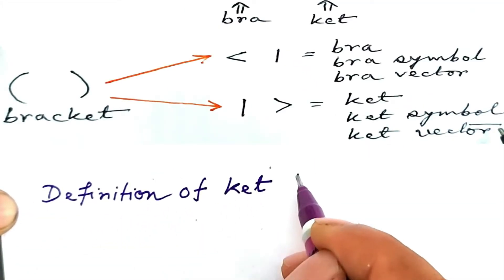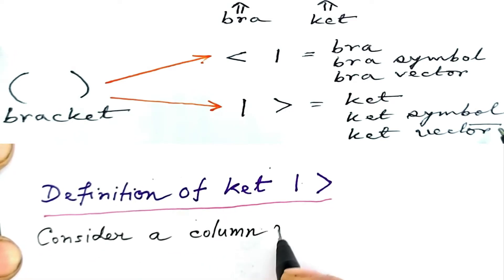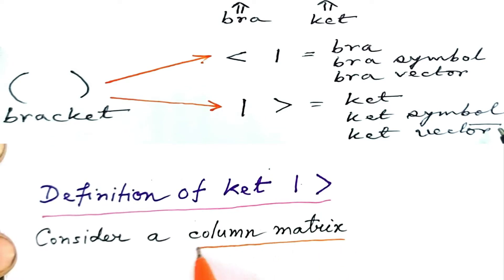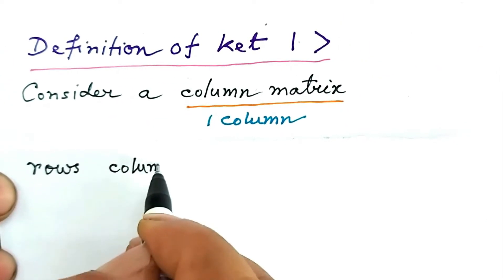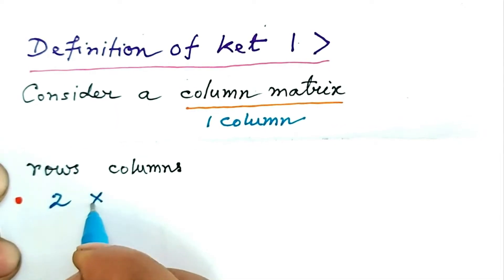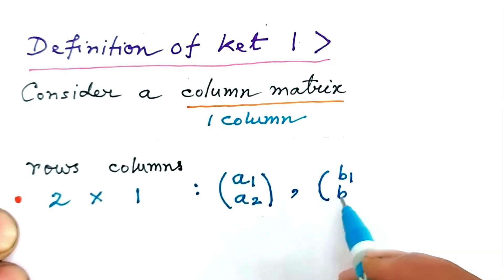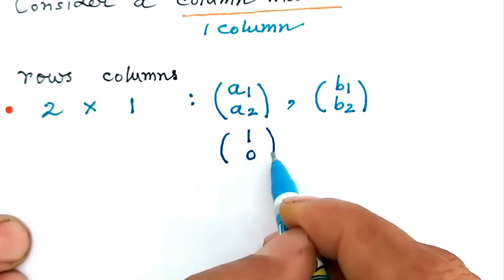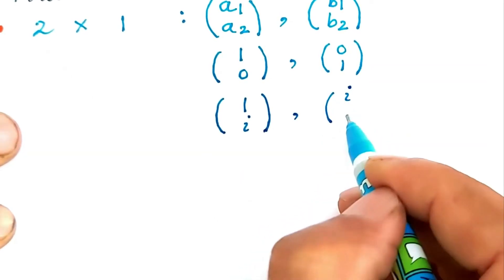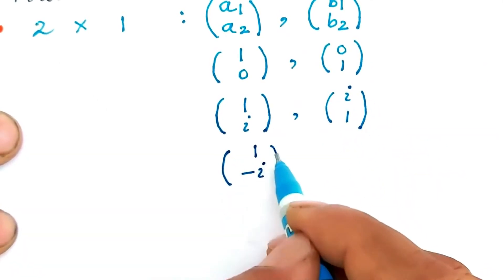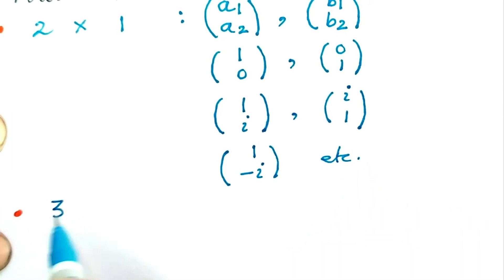Let us define what we mean by Ket. Consider a column matrix, which consists of only a single column of elements and may contain any number of rows. Consider a 2×1 matrix, that is a column matrix with two rows, like (A1, A2), or (B1, B2), or (1, 0), or (0, 1), or (1, i), or (1, −i), and so on.